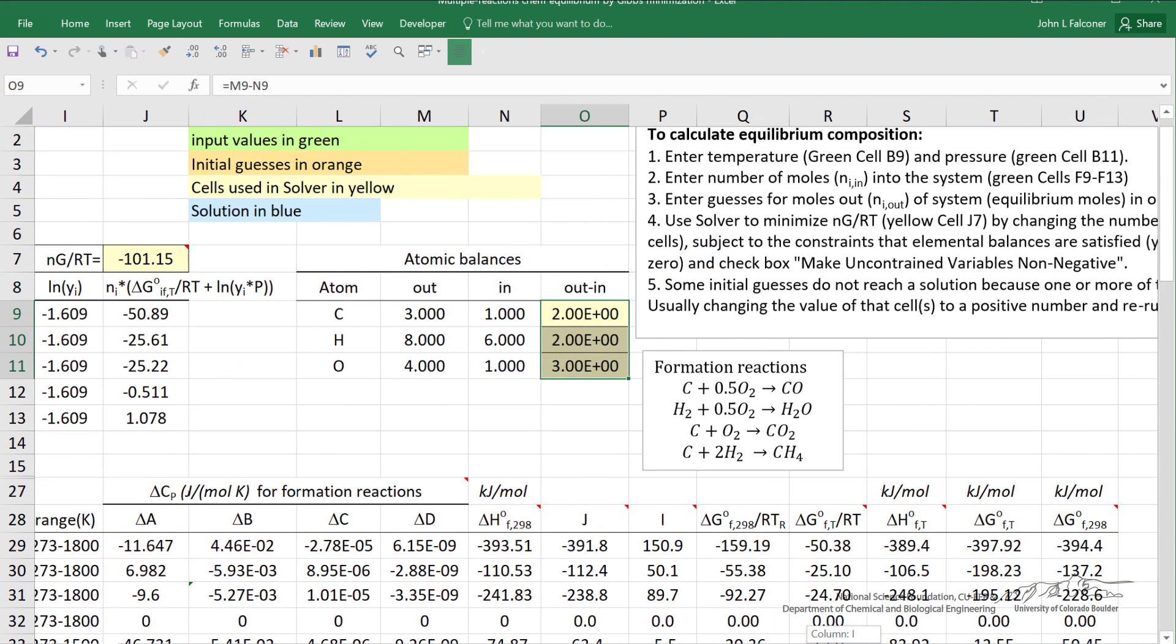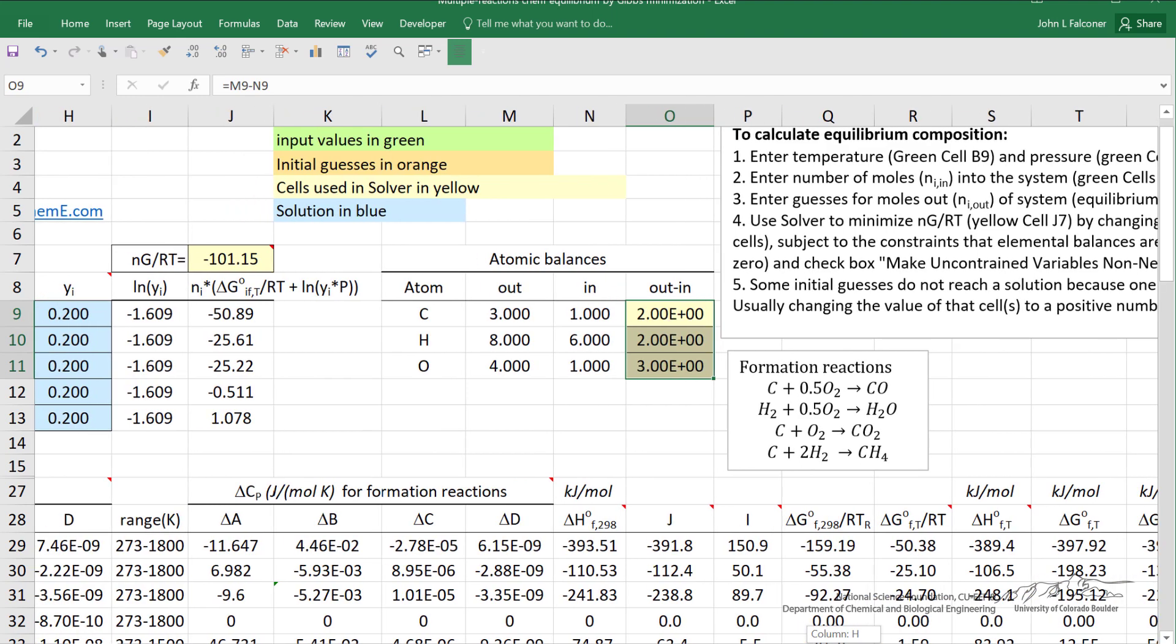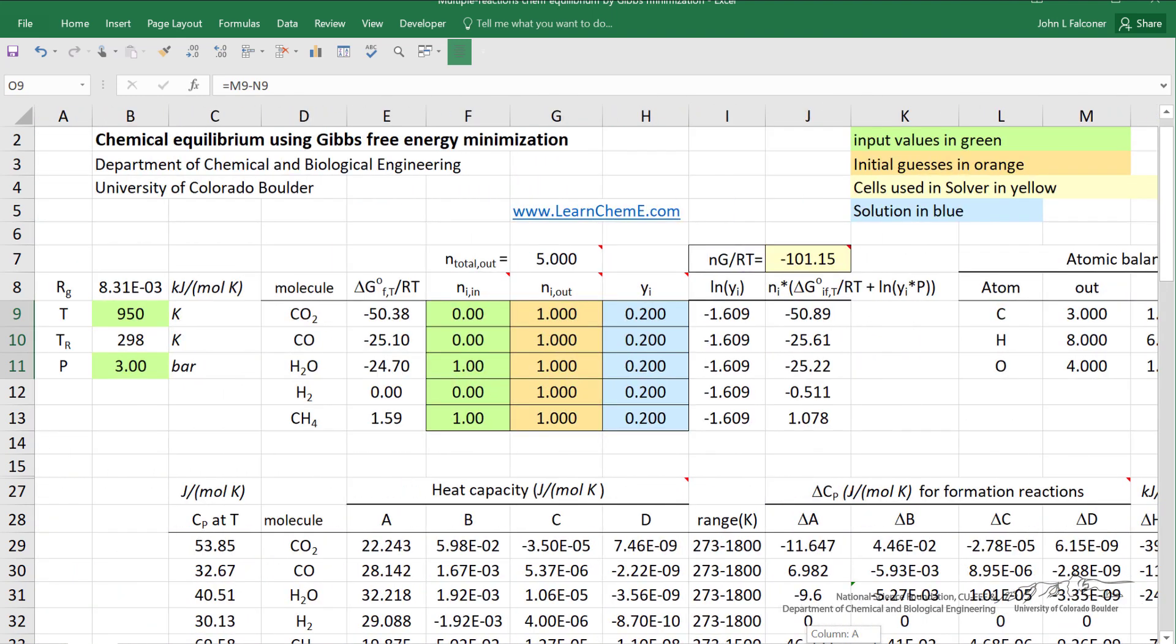It lists the formation reactions. What's below are the heat capacity values, the delta G's and the delta H's, that are used to calculate these change in Gibbs free energy at standard conditions, but at the temperature of interest.